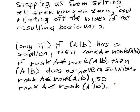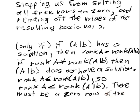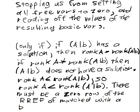So there has to be, must be a zero row of the RREF, the reduced row echelon form of A, matched with a BI that does not equal zero. That's what this means. So, consequent to this inequality.